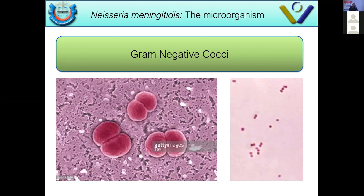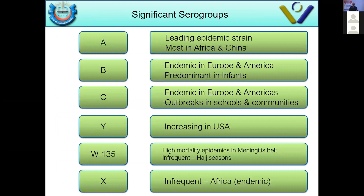It's a very virulent bacteria with several significant serogroups. Serogroup A is the leading epidemic strain, mostly in Africa and China, and everybody knows about the meningitic belt of Africa. Serogroup B is endemic in Europe and America, though it is very difficult to develop a conjugate serogroup B meningococcal vaccine, and it predominates in infants.